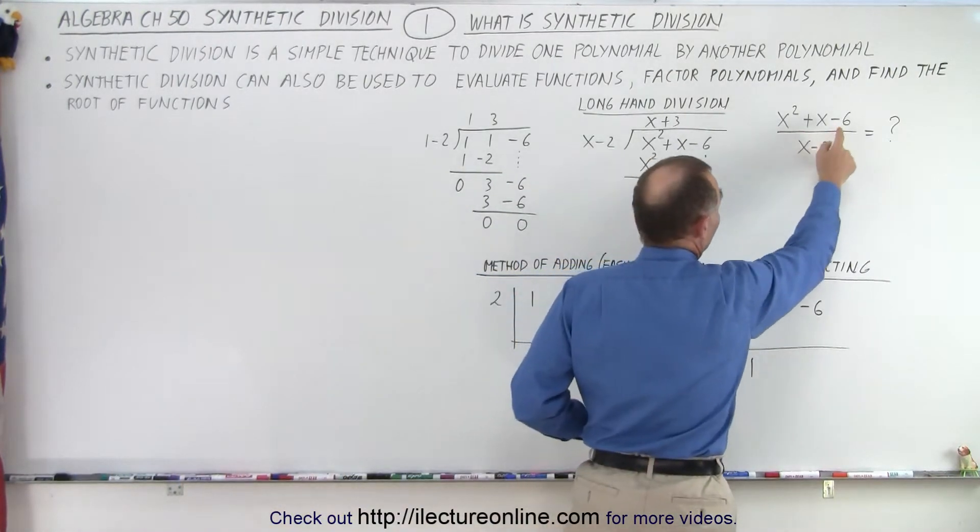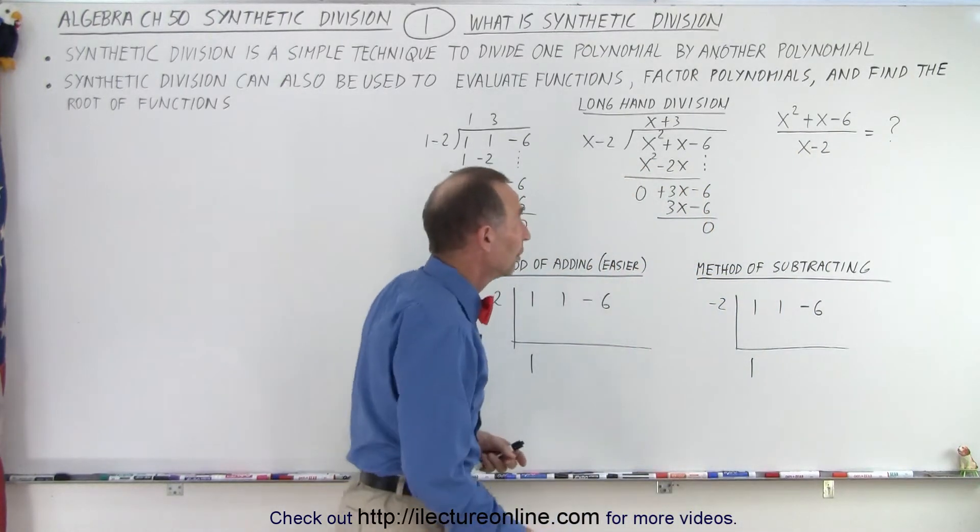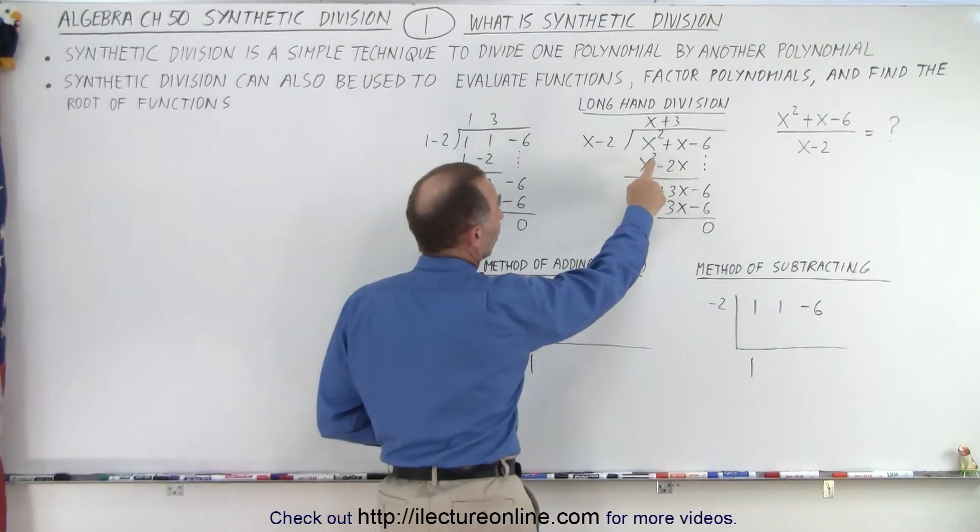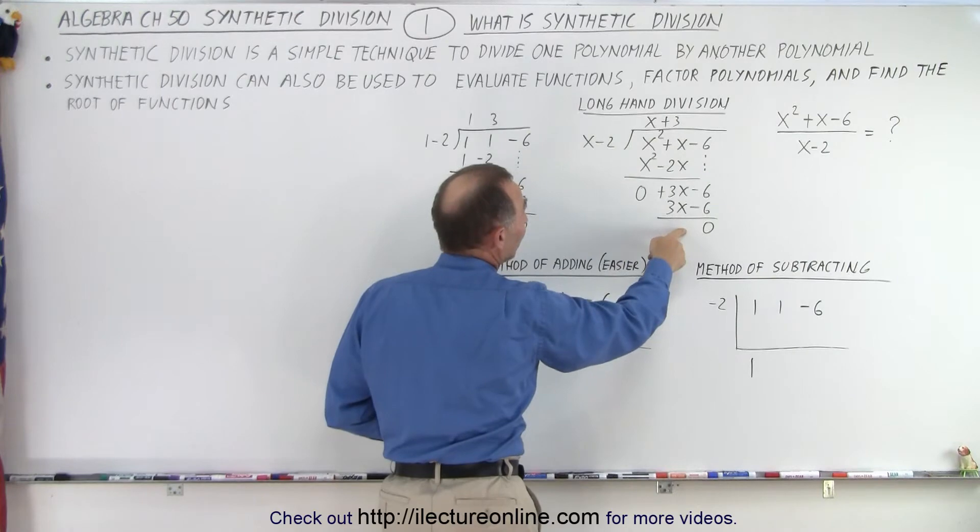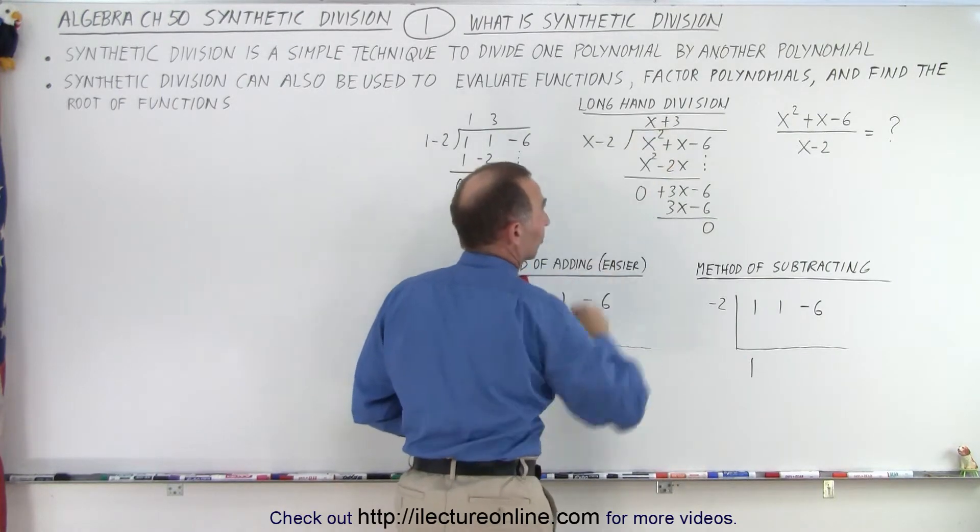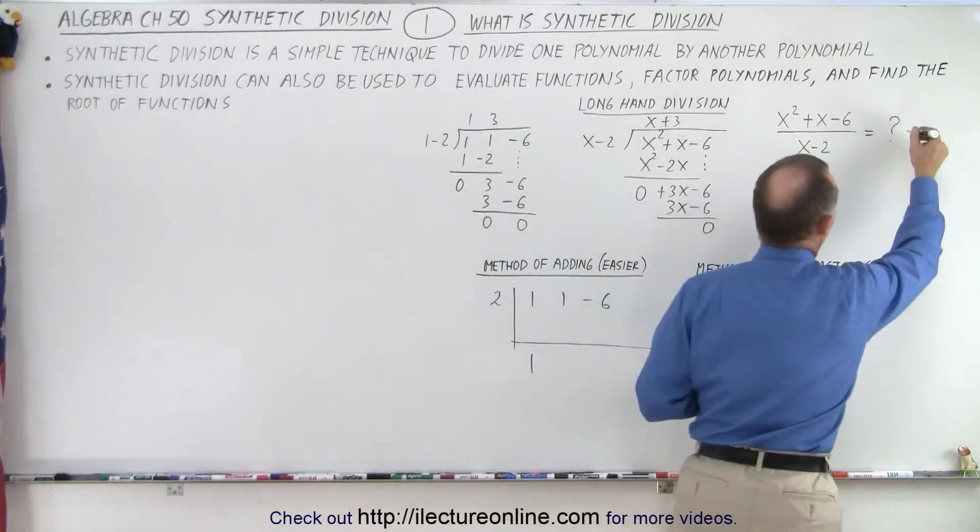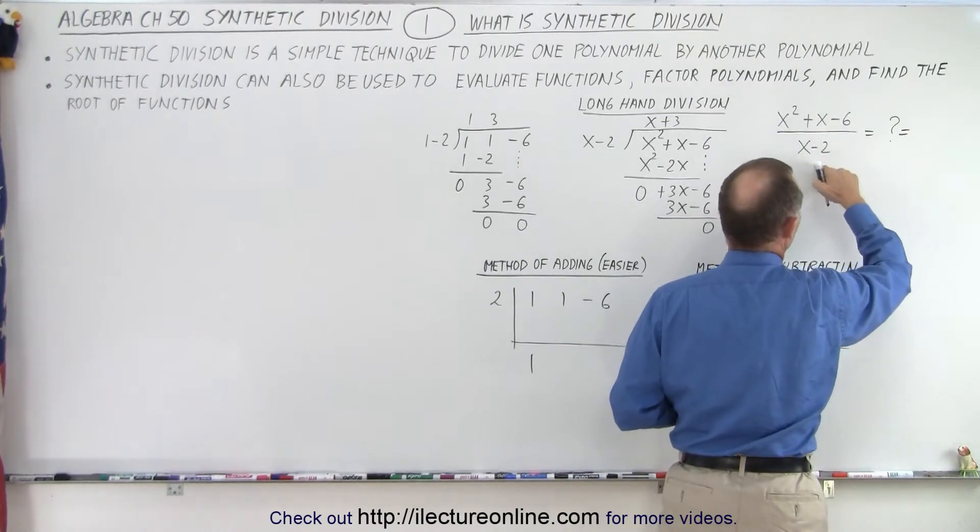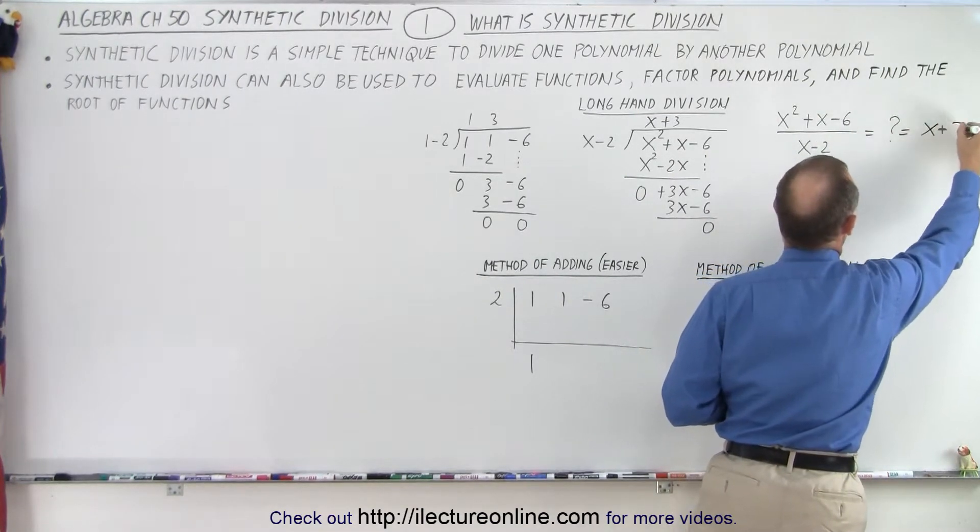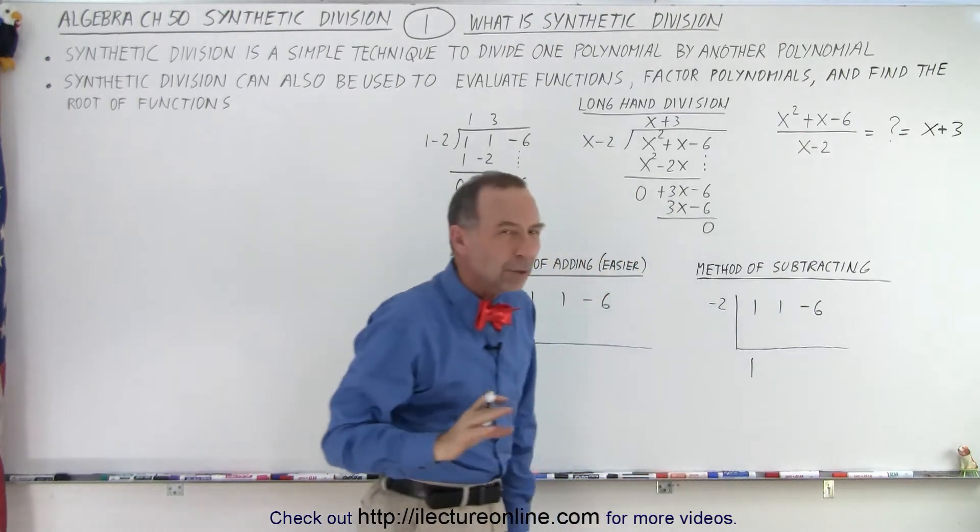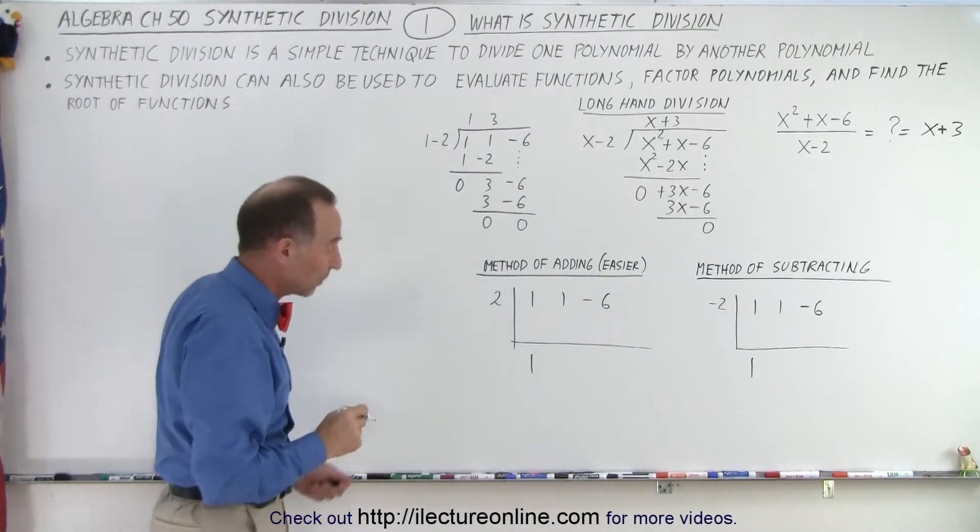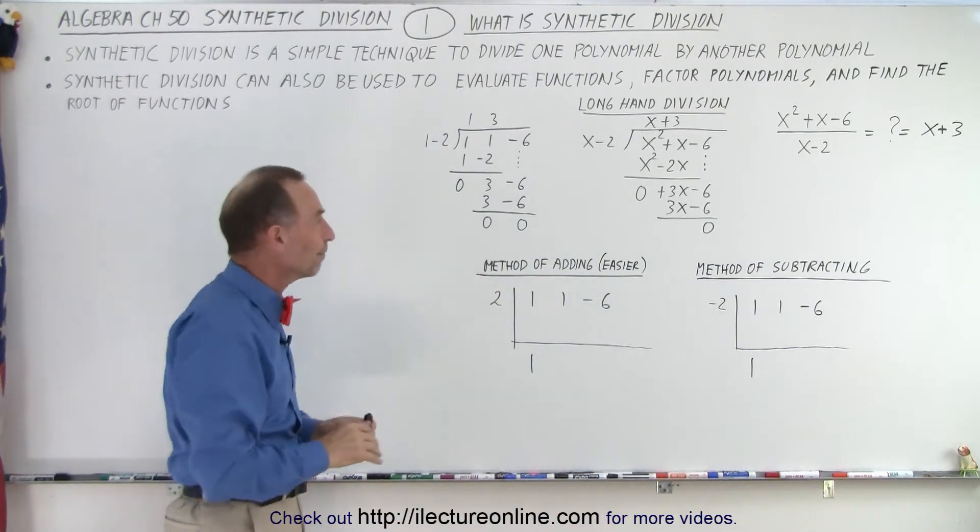For example, x squared plus x minus 6 divided by x minus 2. When we use longhand division, notice we go through the process, and we find that the result of that is x plus 3. So we can see that the result of x squared plus x minus 6 divided by x minus 2 is x plus 3. So how can we do that using synthetic division?